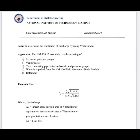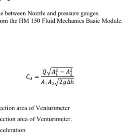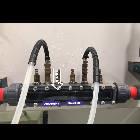The aim of this experiment is to determine the coefficient of discharge using the venturimeter. To find out the coefficient of discharge, we use the formula: C_D = Q × √(A1² − A2²) / (A1 × A2 × √(2g × ΔH)), where A1 and A2 are the areas of the inlet and outlet, and ΔH is the pressure head.